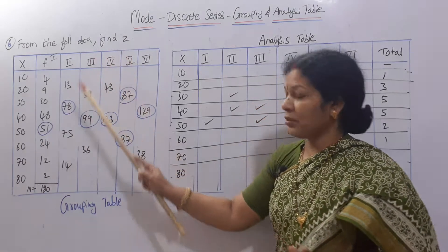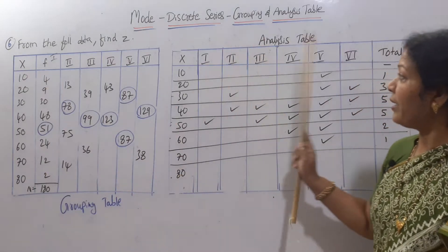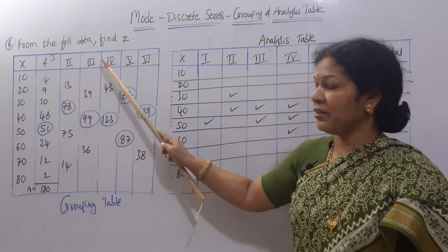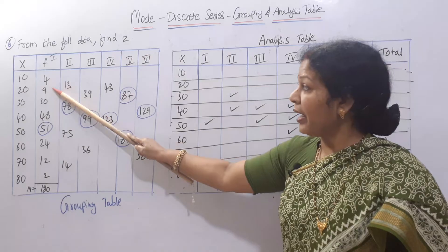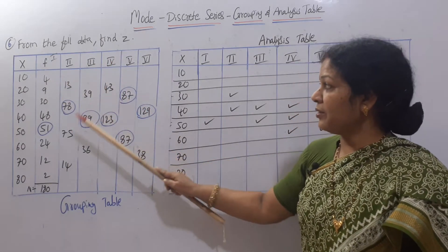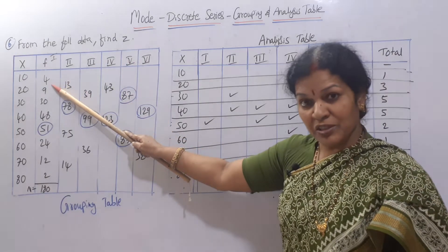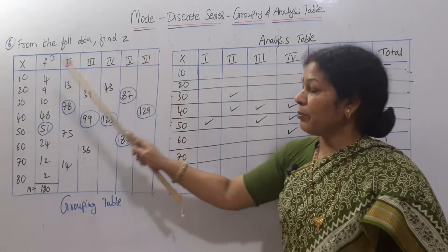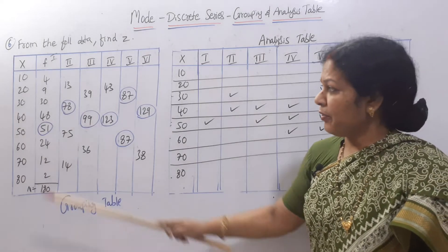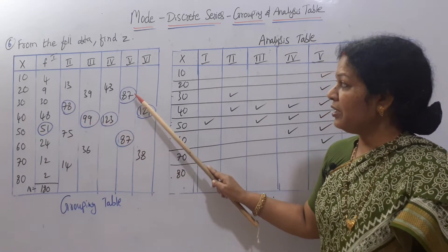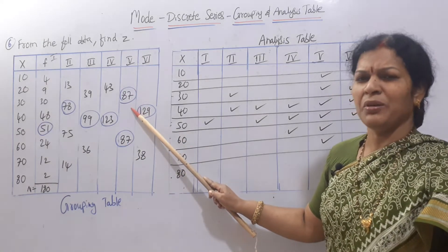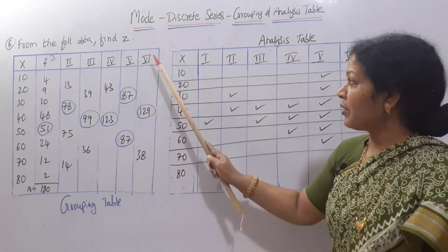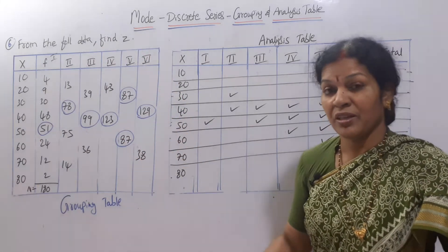I taught you in the previous class, so I just have drawn already the grouping analysis table. This is grouping table and analysis table. Six columns are there. First column as it is, second column two numbers we have added, third column we left the first number and added two numbers, fourth column three numbers added, fifth column left the first number and added three, three, three, sixth column we left the first two numbers and added three, three.